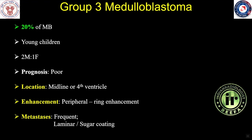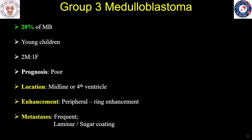Group 3 medulloblastoma is another type with very poor prognosis, comprising about 20% of medulloblastomas and seen in young children. These are twice as common in boys compared to girls. Location, similar to Group 4, is in the midline involving the vermis and/or the fourth ventricle. Enhancement tends to be variable but more commonly peripheral or ring-enhancing. Metastases are frequent. A feature of Group 3 is that these can have a small primary tumor with florid extensive disseminated leptomeningeal disease. Classically, the metastases have a laminar or sugar-coating appearance.